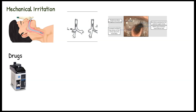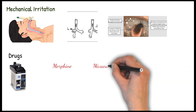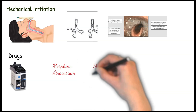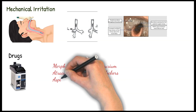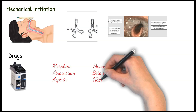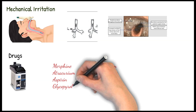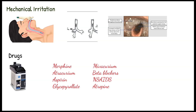Bronchospasm can also occur due to various drugs, including use of desflurane vaporizers in smokers, and other drugs such as morphine, mivacurium, atracurium, use of beta blockers, aspirin, NSAIDs, glycopyrrolate, and atropine — all these drugs can also cause bronchospasm.